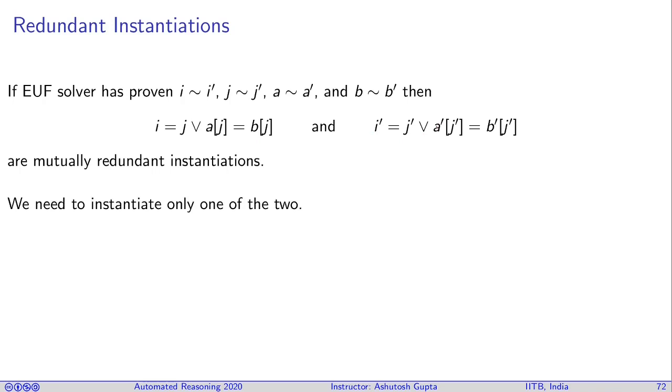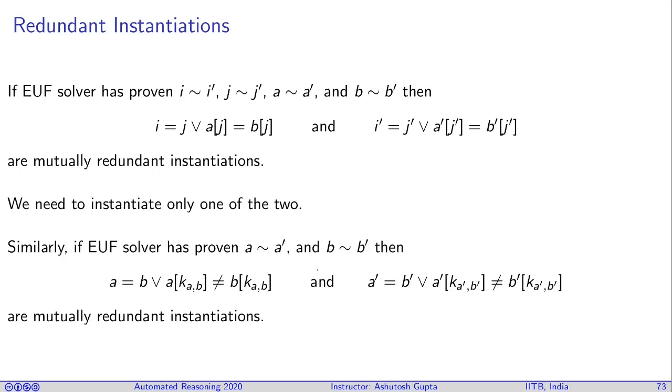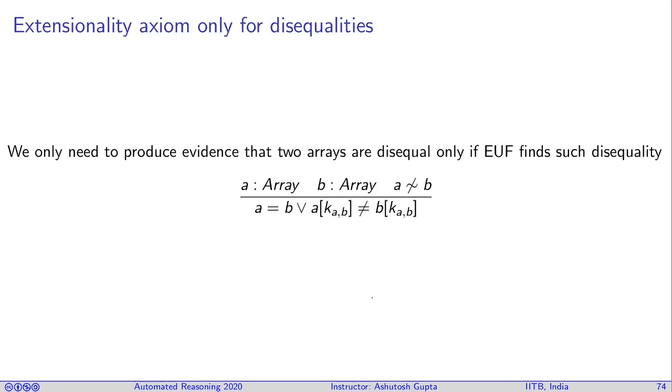Similarly, we must do the same thing when introducing the third axiom. We only need to produce evidence of the two arrays that are disequal if EUF finds such a disequality. If in your equivalence classes, actually somebody has said they are not equal, then only go after it and try to introduce this thing. Otherwise, don't do it. And this keeps the completeness.